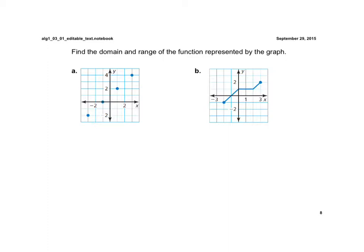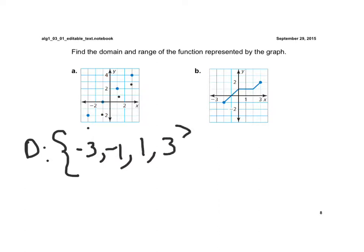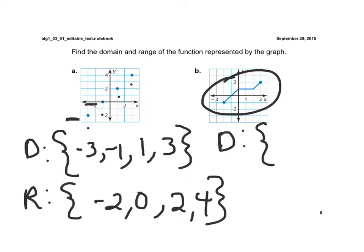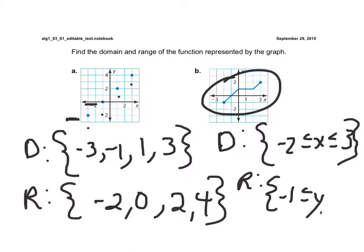Find the domain and range. The domain values are the x values. We have four points, so the domain is negative three, negative one, one, and three. The range values are the y values: negative two, zero, two, and four. In letter B, since this is a solid line, I have to express it as an interval. The domain values would be negative two is less than or equal to x is less than or equal to three. The range values go from negative one is less than or equal to y is less than or equal to two. The endpoints are included because they are both colored in.